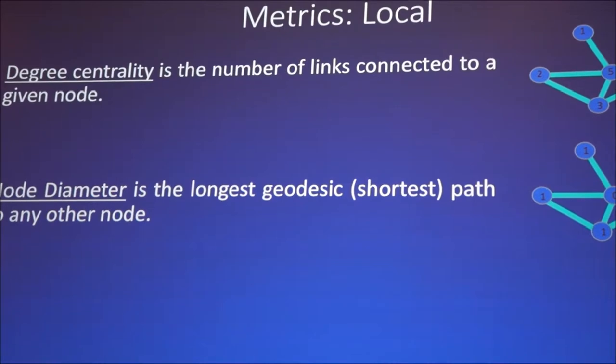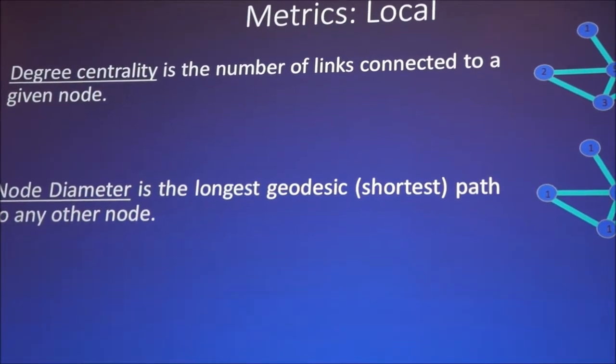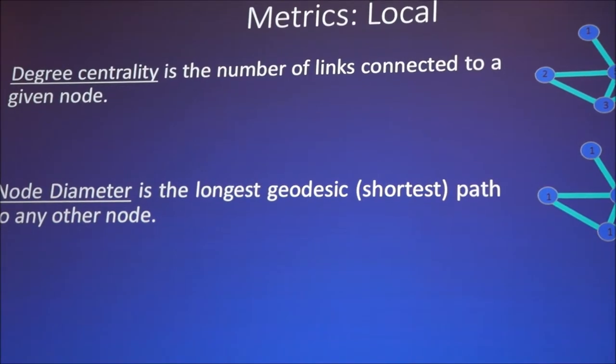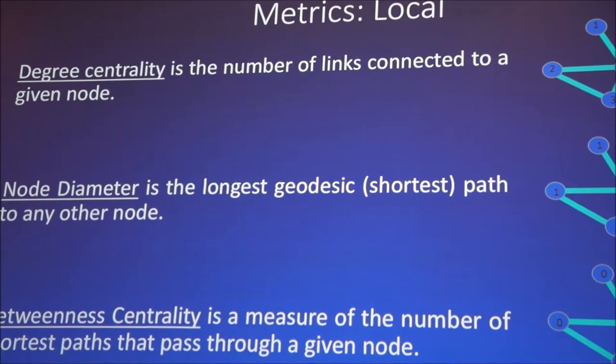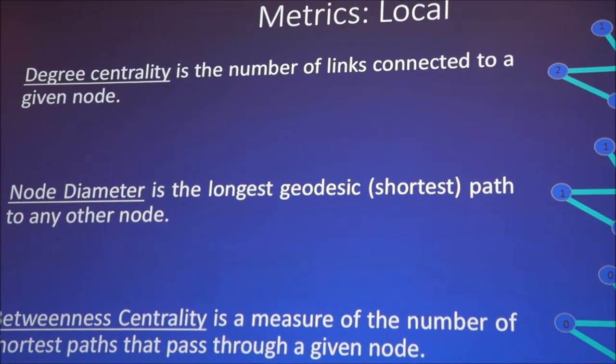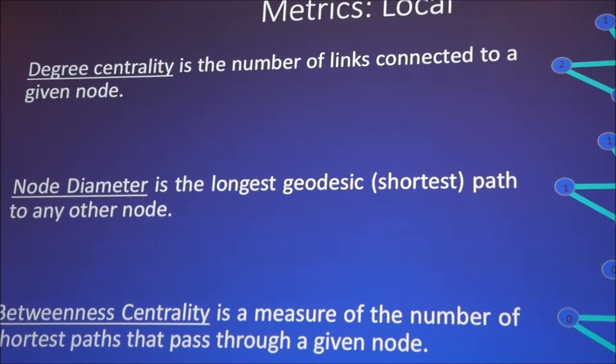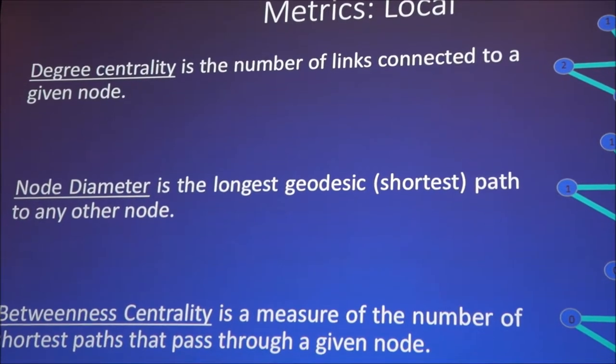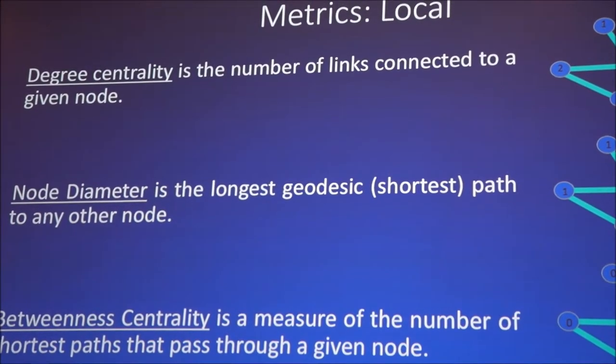And then we have node diameter, so this is the longest geodesic path to any other node. Essentially, it's the longest shortest distance or degrees of separation to another node. And betweenness centrality is similar, but it's a measure of the number of shortest paths that pass through a given node. So I mentioned that term broker. If it has a very high betweenness centrality, it means a lot of minerals are connected, a lot of nodes are connected through this individual node.